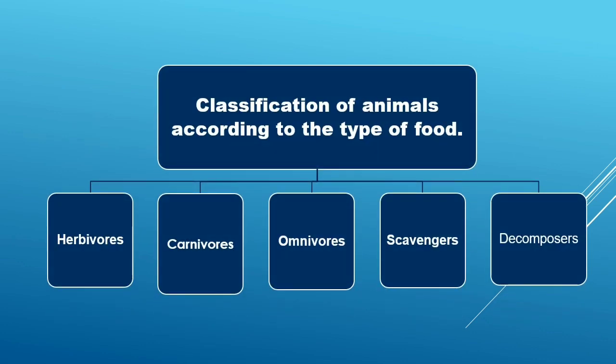We also studied Classification of Animals according to the type of food. First is Herbivorous. Herbivorous use plants directly as their food. Carnivorous. Animals that depend on other animals for their food are carnivorous.